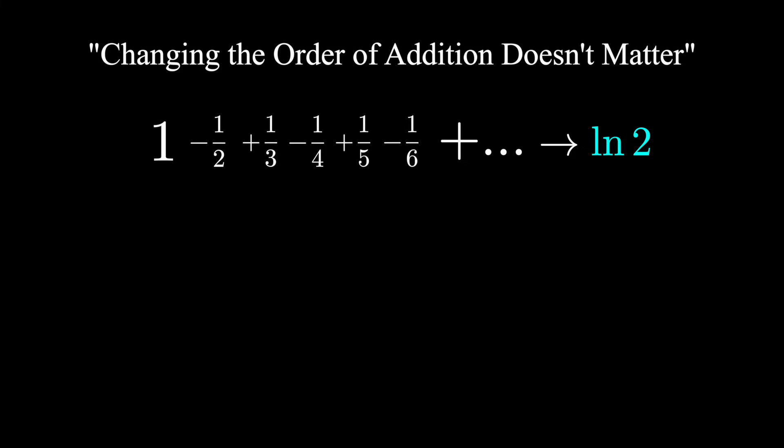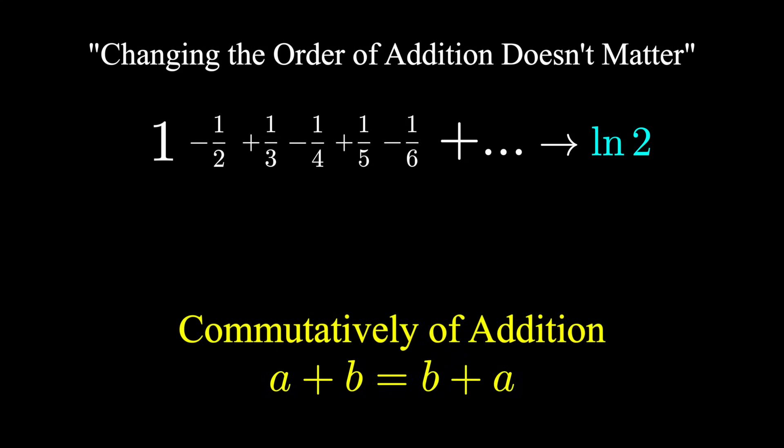Knowing that previous fact might lead you to conclude if we have one of these so-called convergent series, an infinite list of numbers summing to a finite value, that you can rearrange the terms of that sum and end up with the same result. After all, one of the first things you learn in algebra is commutativity of addition, that the order in which you add numbers doesn't matter. Well, that's true for a finite list of numbers.